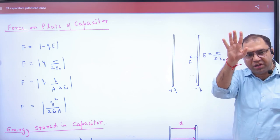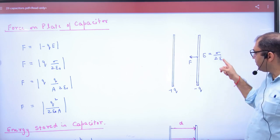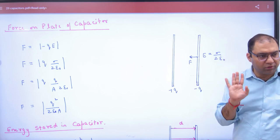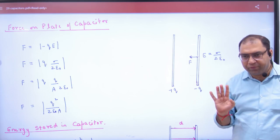Thin plate, we have done this formula, which is sigma by 2 epsilon naught. E value is. How much charge?